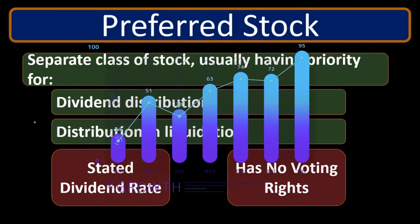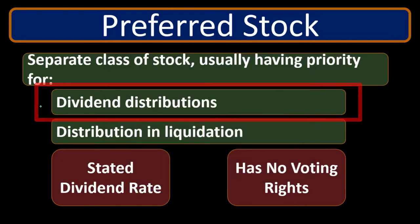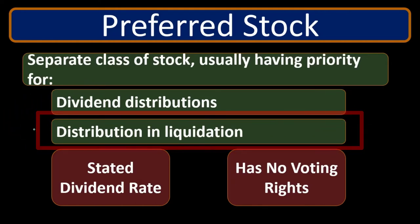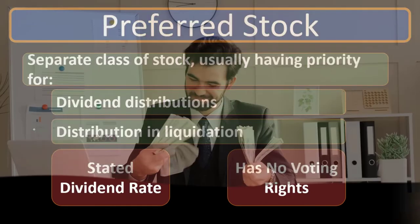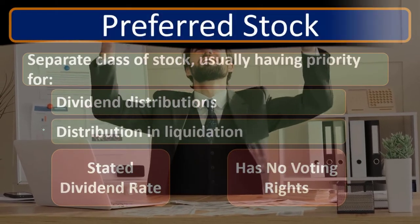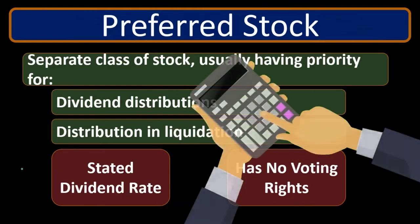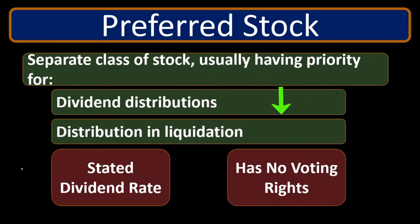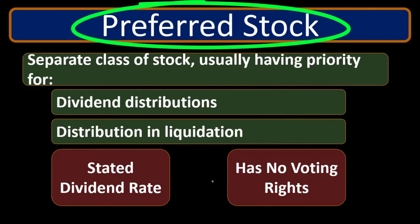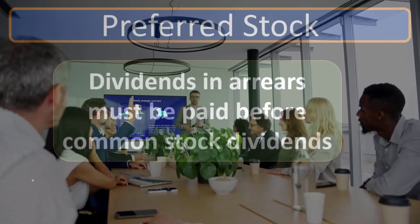Preferred stock is about hedging your bets against a problem rather than betting on long-term growth. If there's long-term growth, you don't want your preferred dividend to be limited — you want increased dividends as growth increases. If the business stays in business and continues to grow, you might prefer common stock. If it goes out of business, preferred stock ensures you get paid first. Preferred stock typically has a stated dividend rate used to calculate the dividend, and preferred stockholders typically have no voting rights.